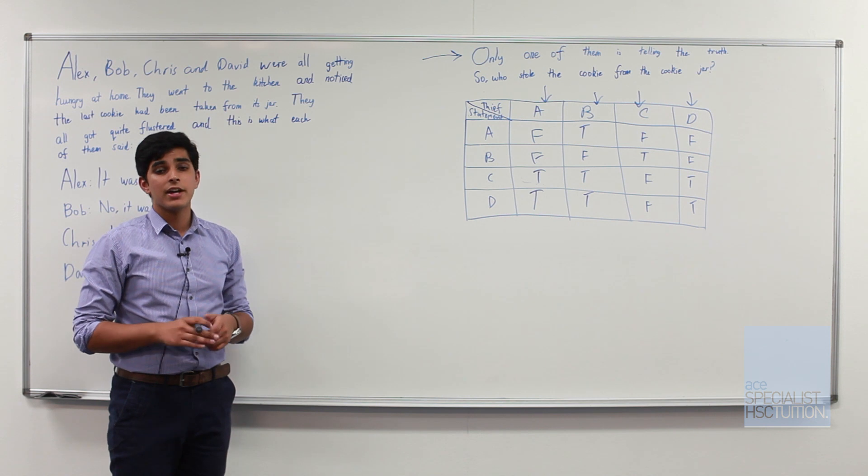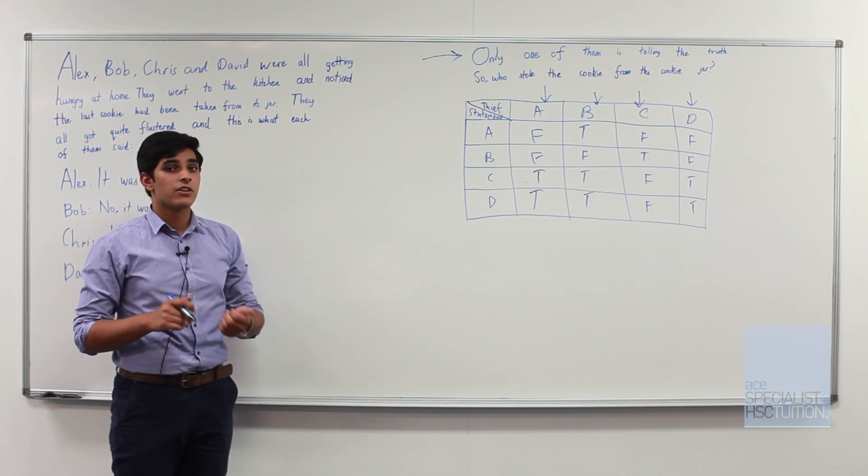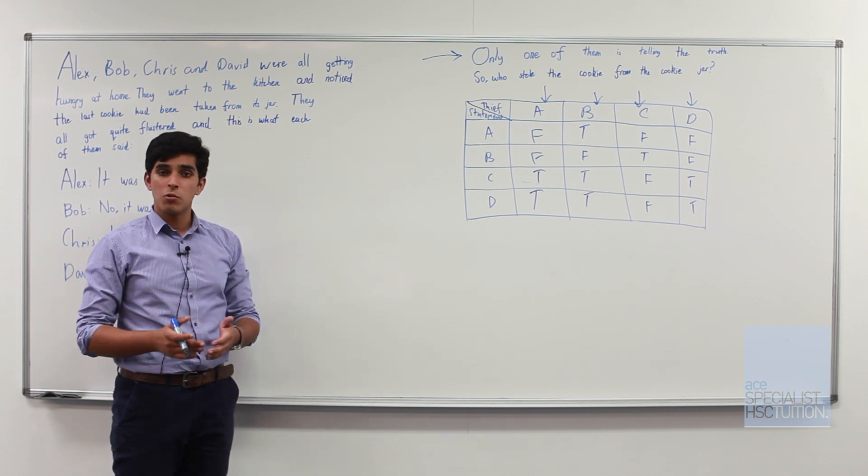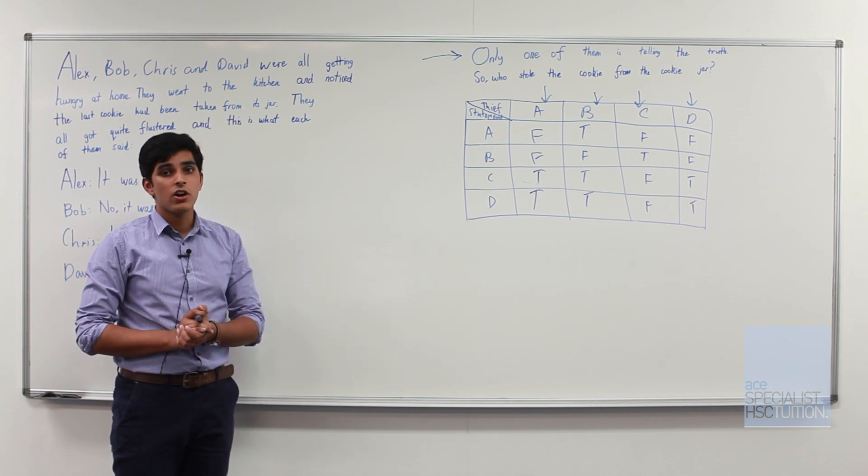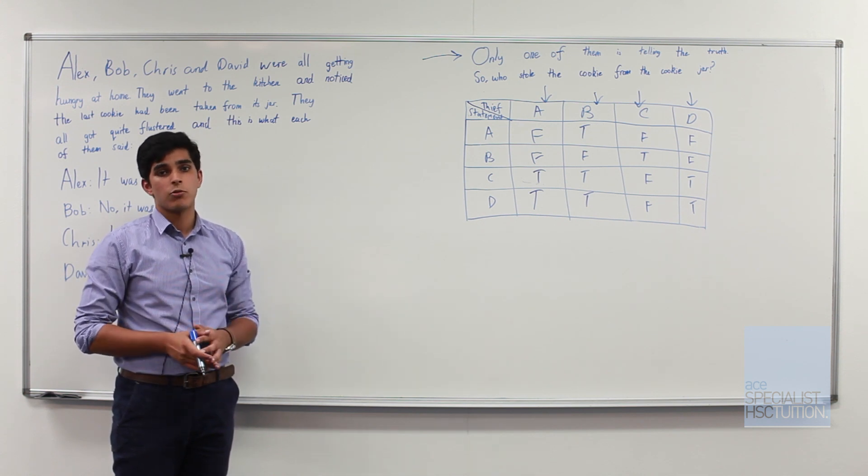So the take home message from this really is whenever encountering a section one problem solving question always try to visually represent your data in graphs, tables or whatever works because more often than not that's going to be quick, concise and correct.